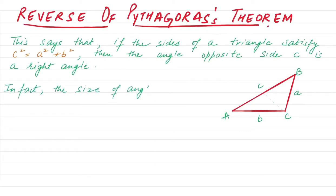In fact, the size of angle C can be checked as follows. We have three properties. If C² < A² + B², then C is less than 90 degrees, so C is an acute angle.